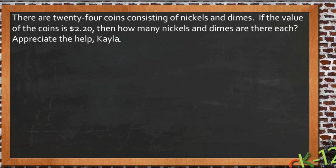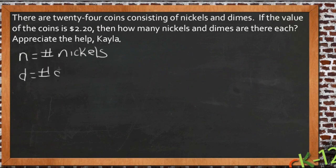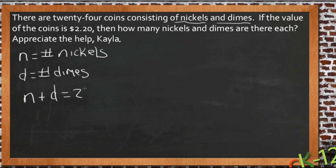So what we know then is that if there are 24 coins consisting of nickels and dimes, if we let n be the number of nickels and d be the number of dimes, then n plus d, the number of nickels plus the number of dimes, must equal 24. So we can say n plus d is 24.